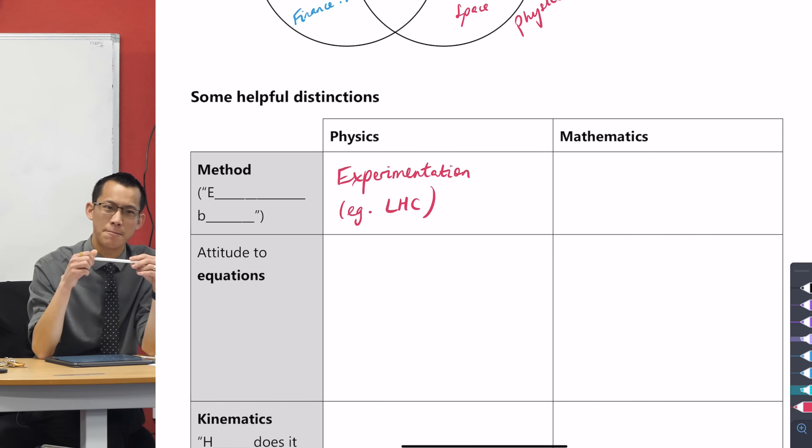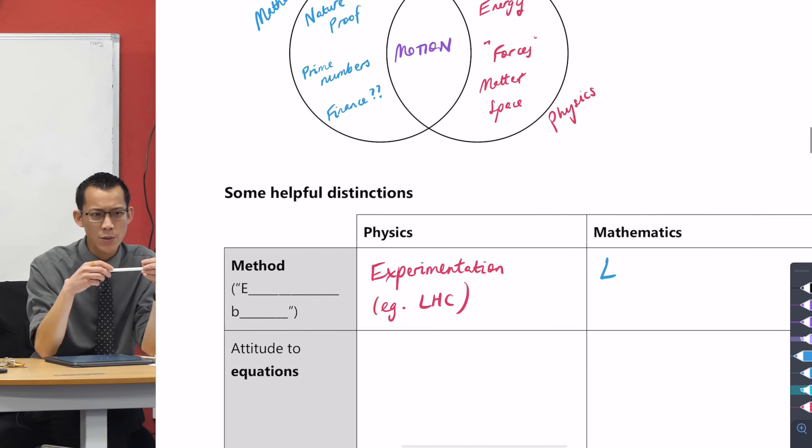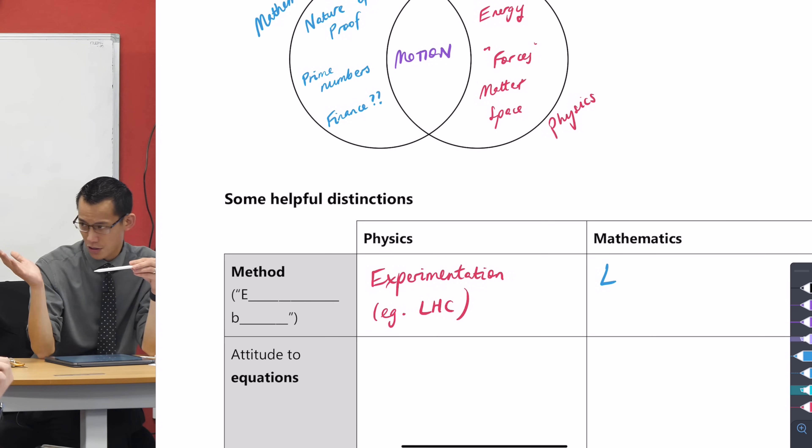Experimentation doesn't cut it in maths. You could give me a billion triangles per second and measure the angle sum of every single one and tell me they were all 180 degrees, and I would say I don't care how many billions of triangles you've got. That's still not proof to me. Mathematically, what do we use instead? This goes back to our nature of proof topic. What do we use? We use logic. We convince ourselves through a process of deduction.